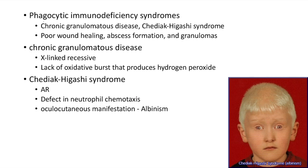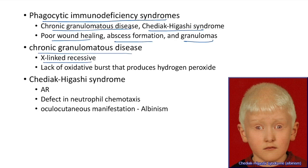Phagocytic immunodeficiency syndromes include chronic granulomatous disease and Chédiak-Higashi syndrome. These present with poor wound healing, abscess formation, and granulomas. Chronic granulomatous disease: X-linked recessive; lack of oxidative burst that produces hydrogen peroxide needed for phagocytosis. Chédiak-Higashi syndrome: autosomal recessive; defect in neutrophil chemotaxis. There are ocular manifestations like albinism.